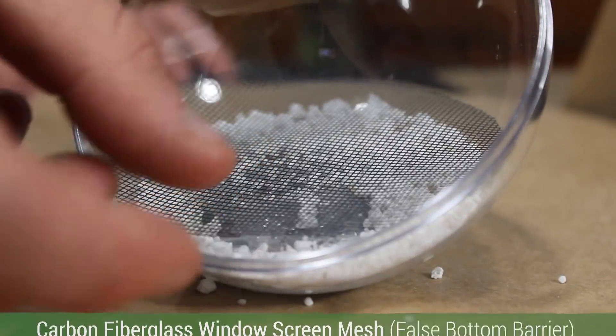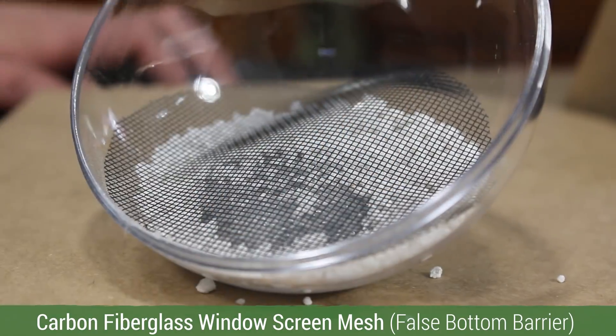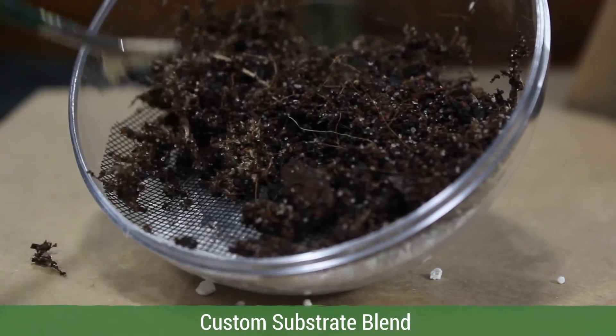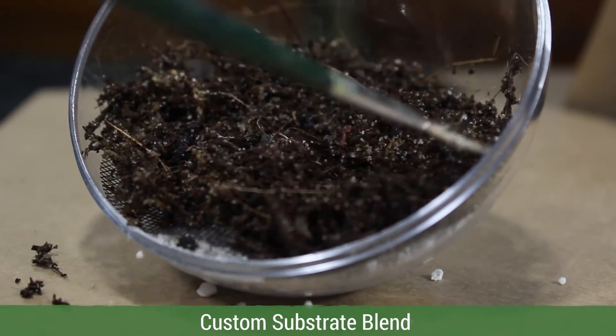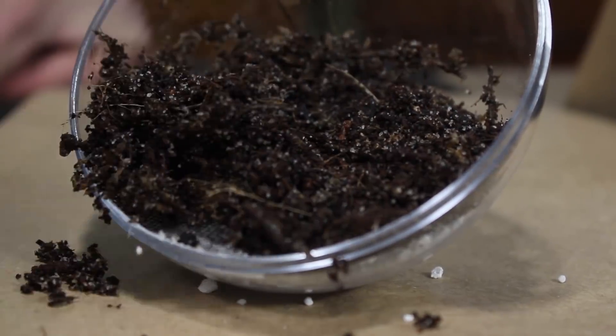Then I added a sheet of carbon fiberglass window screen mesh which will act as the barrier for our false bottom. Next I incorporated a very thin layer of my substrate mix. Normally I would have done a charcoal layer as well, but I have charcoal mixed into the substrate so we can skip that part. This substrate works extremely well for terrariums and if you want to see how I make it then follow the link above.